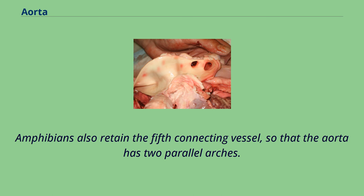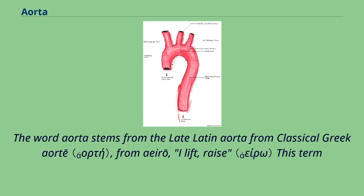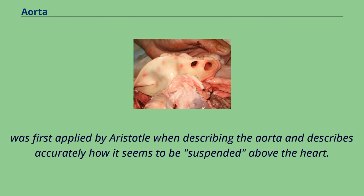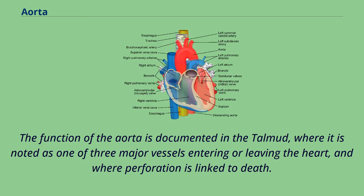The word aorta stems from the late Latin aorta, from classical Greek aortē, from aeirō meaning 'I lift' or 'raise.' This term was first applied by Aristotle when describing the aorta and describes accurately how it seems to be suspended above the heart. The function of the aorta is documented in the Talmud, where it is noted as one of three major vessels entering or leaving the heart, and where perforation is linked to death.